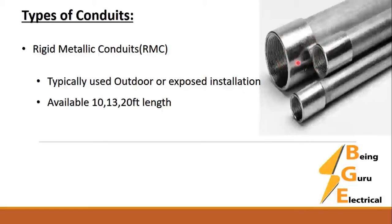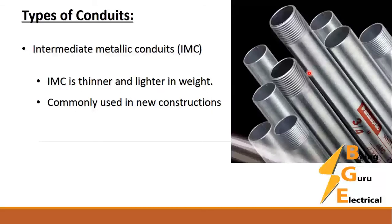The next type is Intermediate Metallic Conduit, or IMC. IMC is thinner than rigid metallic conduit and lighter in weight. It is commonly used in new constructions.